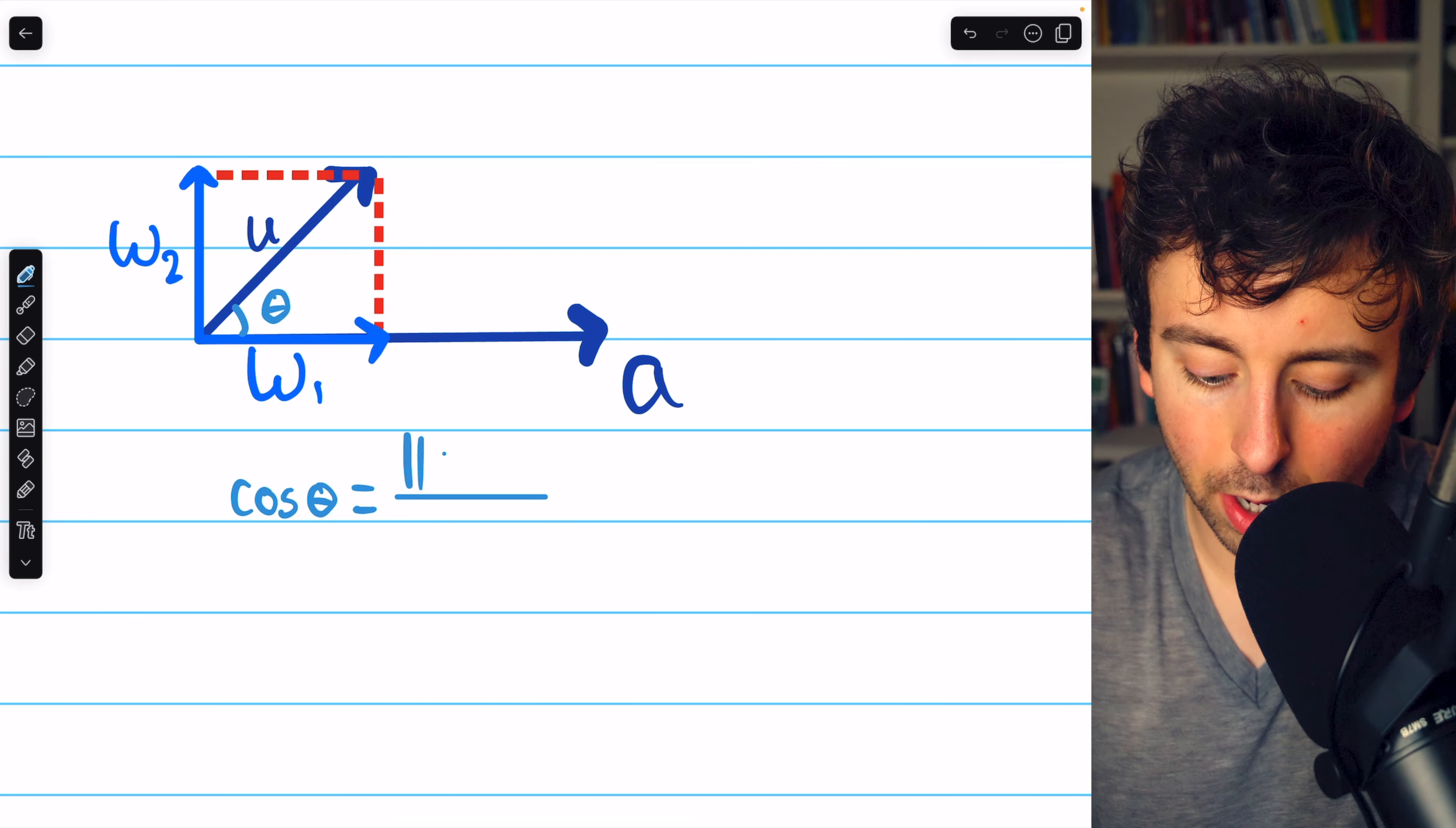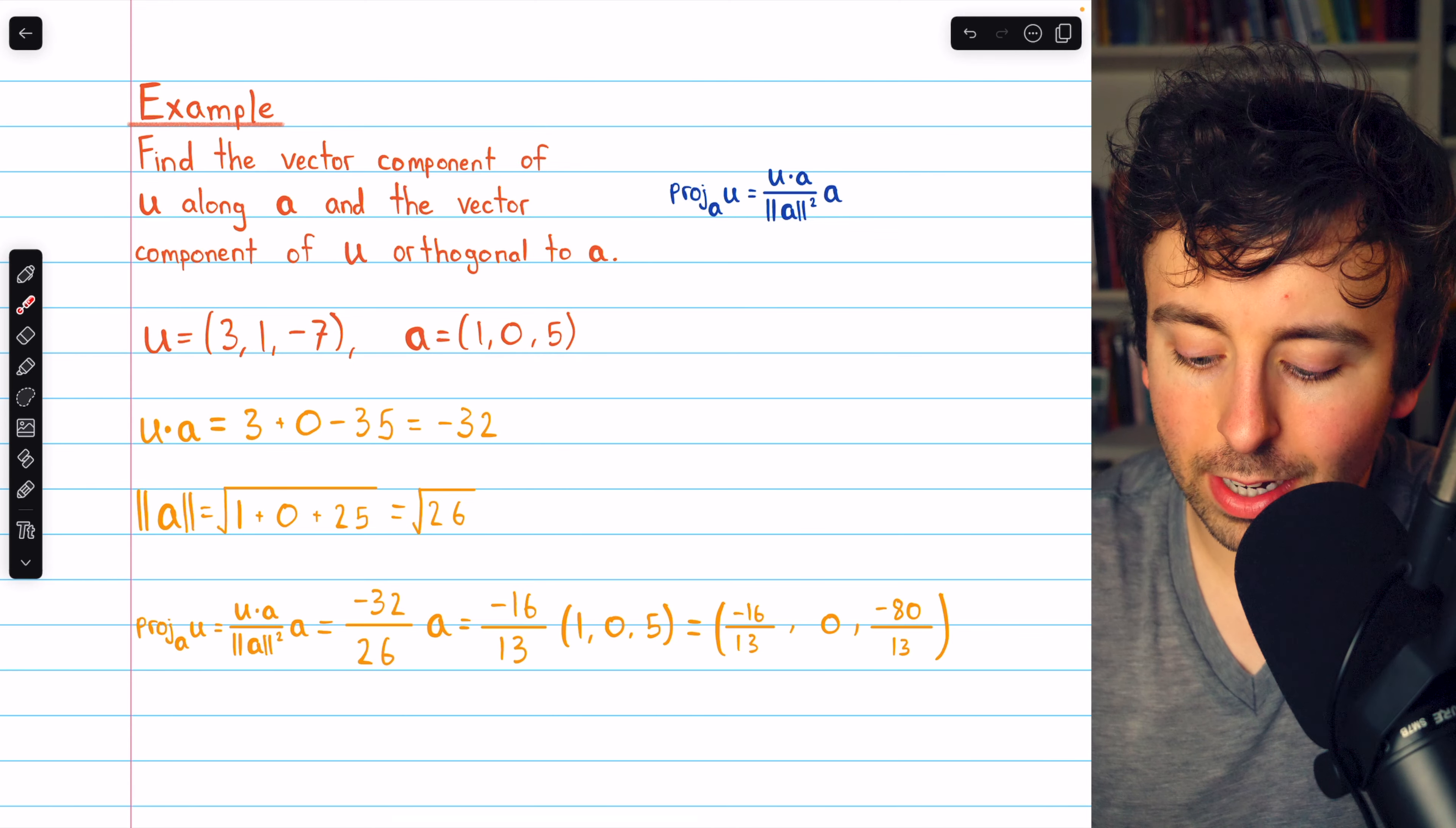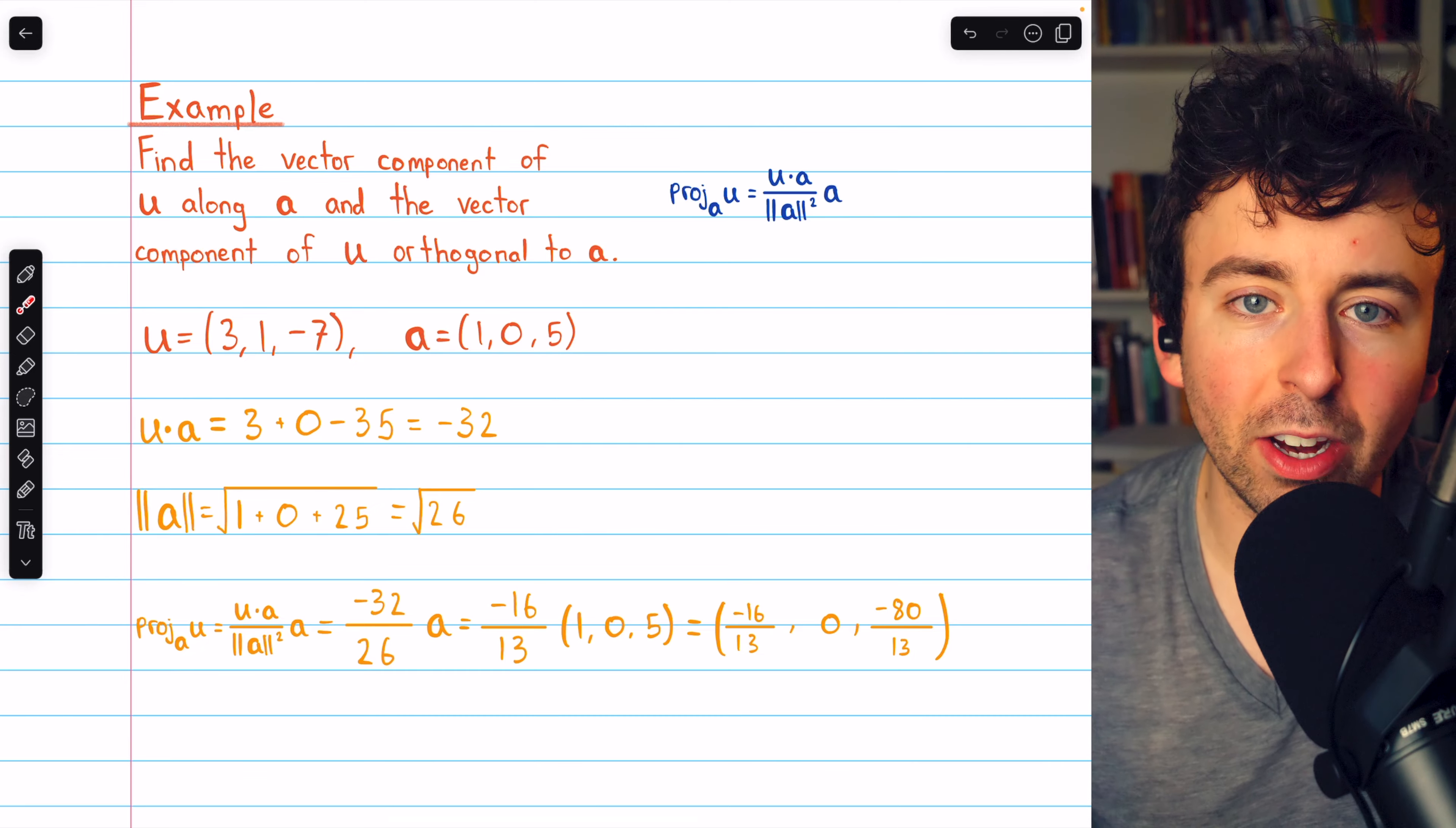We have all the pieces now. The projection of u onto the vector a is a multiplied by this scalar. u·a is negative 32. The denominator, the magnitude of a squared, is 26. So this gets multiplied by a, replacing a with what it equals in component form: 1, 0, 5. We distribute this scalar, which produces this vector: negative 16 thirteenths, 0, and negative 80 over 13. So this is the orthogonal projection of the vector u on the vector a. It's the amount of u going in the direction of a.